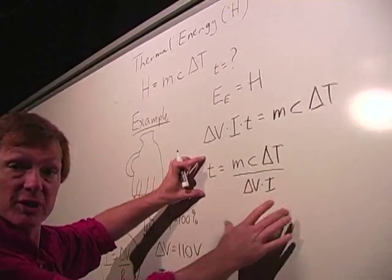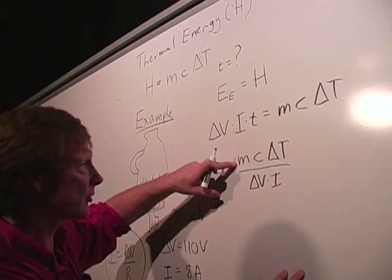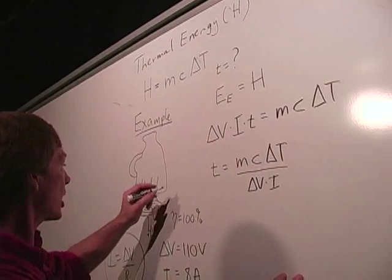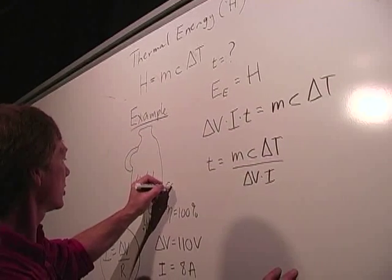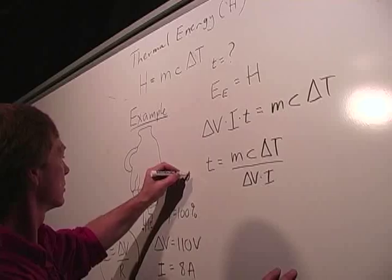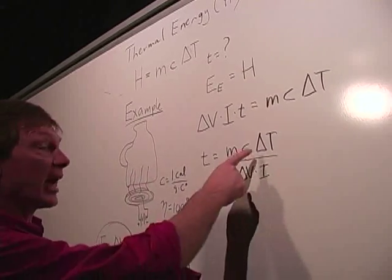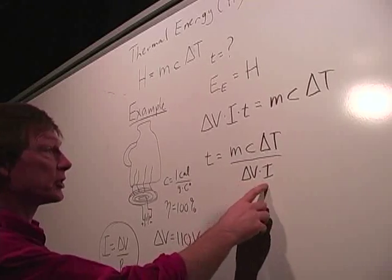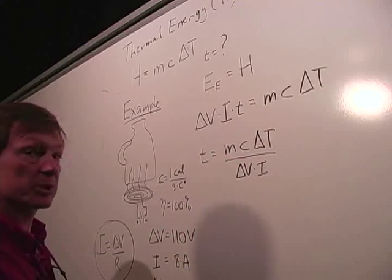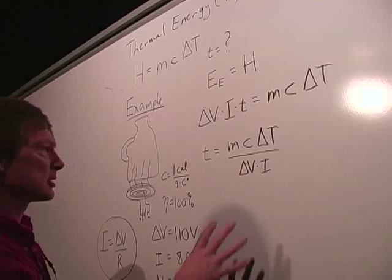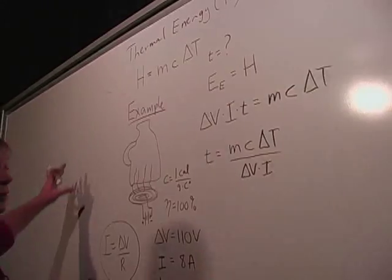That's our working equation. But we're missing some things. We don't have the mass. Now the specific heat of water, I can give you that. The specific heat of water is one calorie per gram per Celsius degree. We got that. We have to calculate the temperature difference. Voltage and current we have. So mass and temperature difference. Let's see. I need a room here, so I'm going to do it right up here.